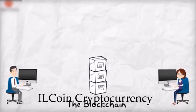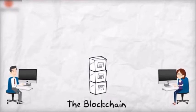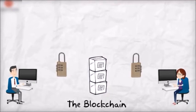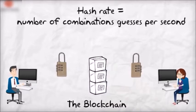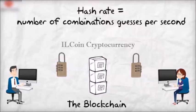Imagine that you are a miner, and each time you want to enter your block into the blockchain and get a reward, you would be given a combination lock and would need to guess the combination in order to enter your block. Your computing power, or hash rate, is the number of combinations you can guess in a second — so the more computing power you have, the faster you'd guess the combination.